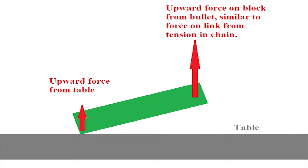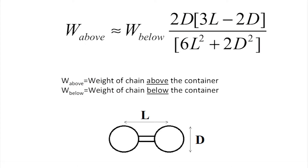This sketch shows the forces acting on a link. Using Newton's laws, the weight of the chain above the container can be calculated in terms of the weight of the chain below the container, and the length and width of the links.